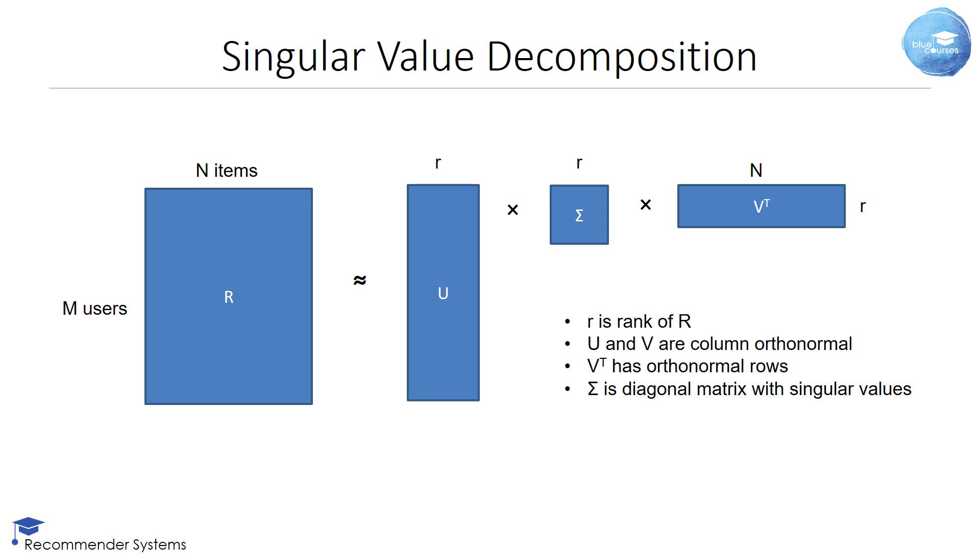U is an M by R matrix. Sigma is a square R by R matrix. VT is an R by N matrix. R is the rank of the rating matrix R. U and V are column orthonormal. VT has orthonormal rows. Sigma is a diagonal matrix with the singular values along the diagonal.